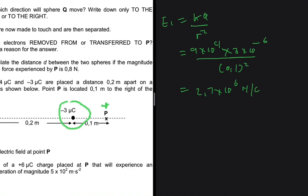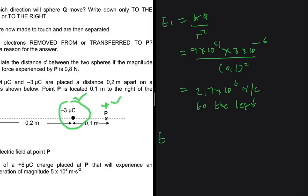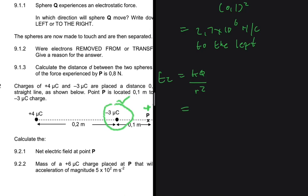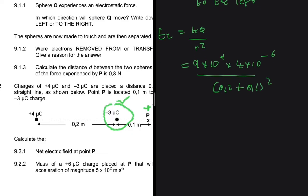Now for E2 due to the +4×10⁻⁶ C charge. The distance from that charge to point P is 0.2 + 0.1 = 0.3 meters. E2 = (9×10⁹ × 4×10⁻⁶) / (0.3)² = 4×10⁵ N/C. Since both the charge and test point are positive, the force is repulsive, so E2 points to the right.